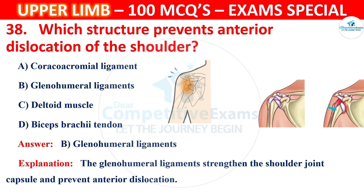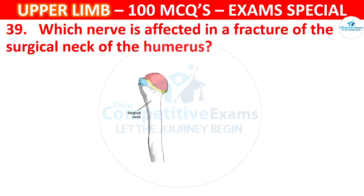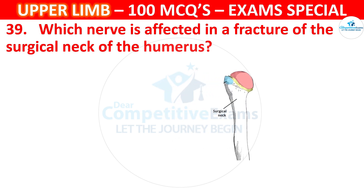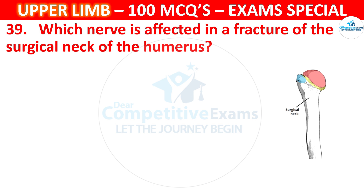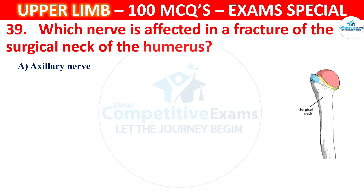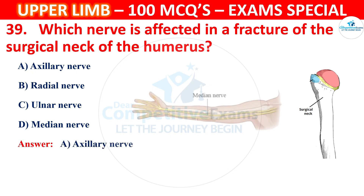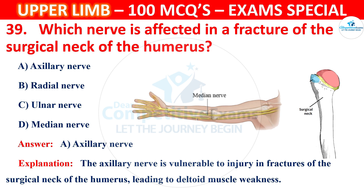Question number 39: Which nerve is affected in a fracture of the surgical neck of the humerus? Options: axillary nerve, radial nerve, ulnar nerve, or median nerve. The correct answer is A, axillary nerve. The axillary nerve is vulnerable to injury in fractures of the surgical neck of the humerus, leading to deltoid muscle weakness.